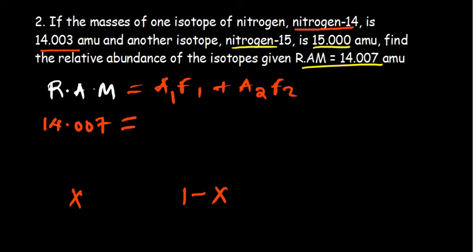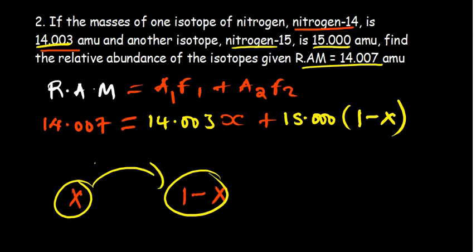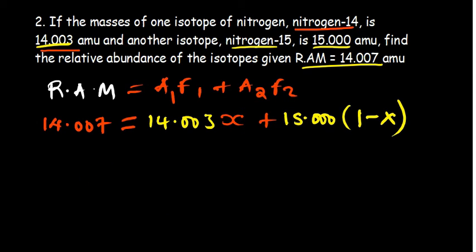I'll start with nitrogen-14. The actual atomic mass is 14.003, so consider that one to be x by percentage, plus the other one is going to be 15.000, and then it will be 1 minus x. This is what is very important in terms of our calculations. Quickly we try to find the value of x.